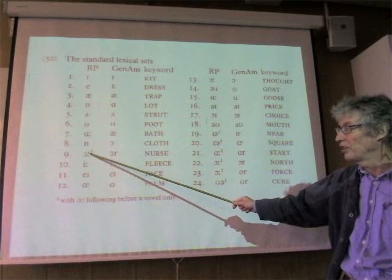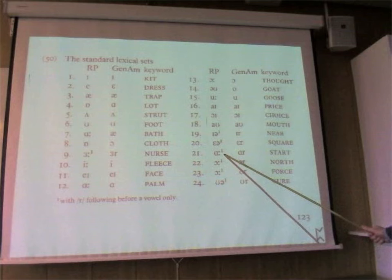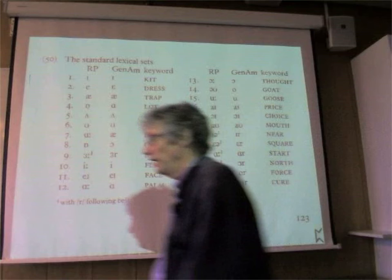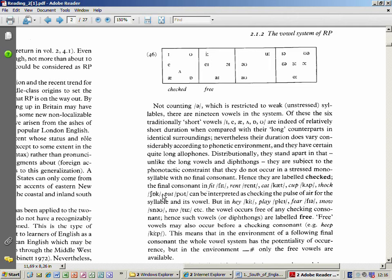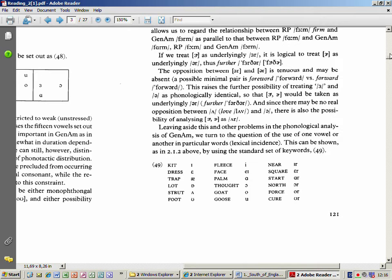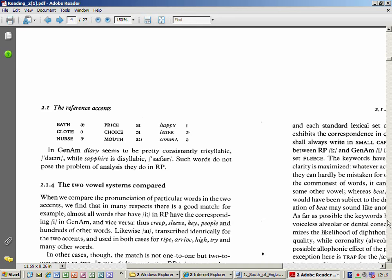If you really want to be thorough, you can write this up and add other accents as you come to them: the Scottish accent, the North of England accent, the Australian accent, the Irish accent. Check the index. These are sounds which have an R following before a vowel only - so in RP it has an R following only if a vowel occurs next, the same with start, north and force.